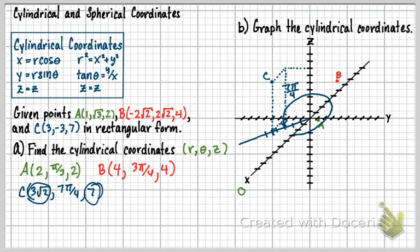So hopefully you see how to graph now, just how these cylindrical coordinates work. Really, it's just polar with the z attached. That's all it really is. So hopefully that's okay with you now.